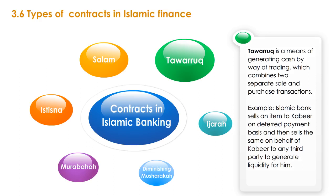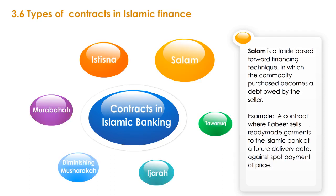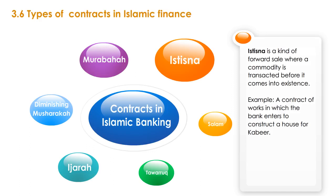Salam is a trade-based forward financing technique in which the commodity purchased becomes a debt owed by the seller — for example, Kabir sells ready-made garments to the Islamic bank at a future delivery date against spot payment of price. Ishtisna is a kind of forward sale where a commodity is transacted before it comes into existence — for example, a contract of works in which the bank enters to construct a house for Kabir.